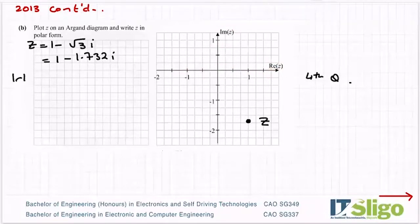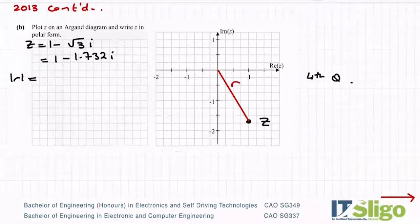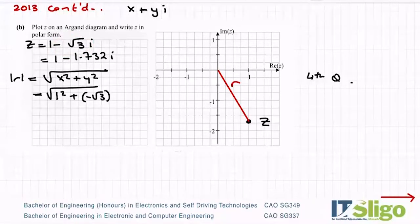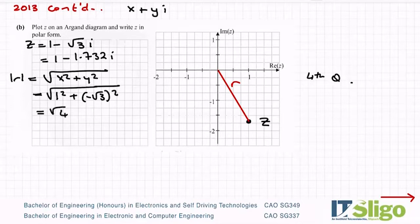That doesn't matter for r. Let's work out how far is it out from the origin. So that's my r. So it's equal to the square root of x squared plus y squared. Assuming any complex number is x plus yi. So my x is 1. So it's the square root of 1 squared plus and my y is minus root 3. So for that I'm getting square root of 4, which is equal to 2.